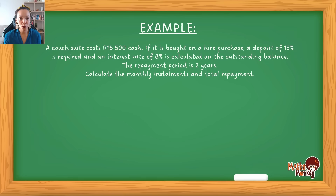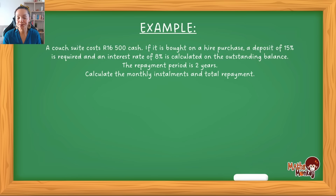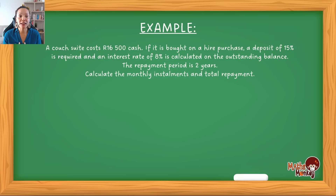There's a lot going on in this question, so let me break it down. Firstly, if you had the cash, the couch would cost you 16,500 Rand. In most cases we don't have that total amount of money, so we opt for hire purchase. In order to secure the couch, you need to put down some money to show your commitment to paying the rest off — that's considered your deposit. In this example, 15% of the cash price is what you must put down before you leave and take the couch.